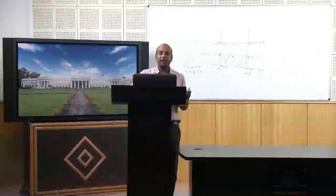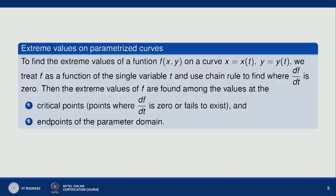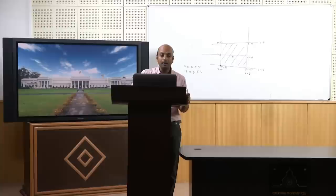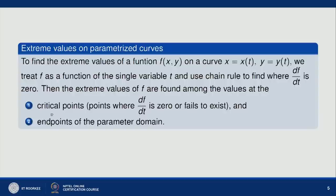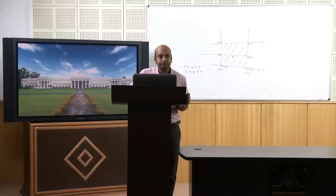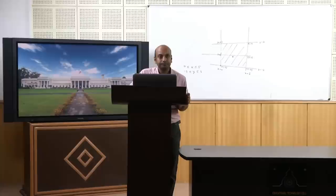In this way we can solve the rectangular plate problem. Now let us find extreme values on parameterized curves. To find the extreme values of f(x,y) on a curve x = x(t), y = y(t), we treat f as a function of the single variable t and use the chain rule to find where df/dt = 0. The extreme values are found among the critical points and, if the parameter domain is bounded, the endpoints.